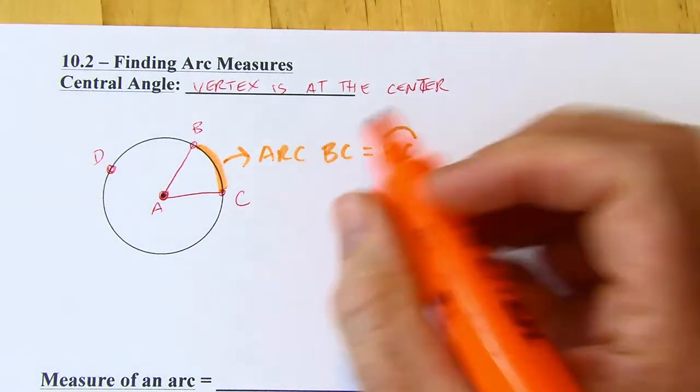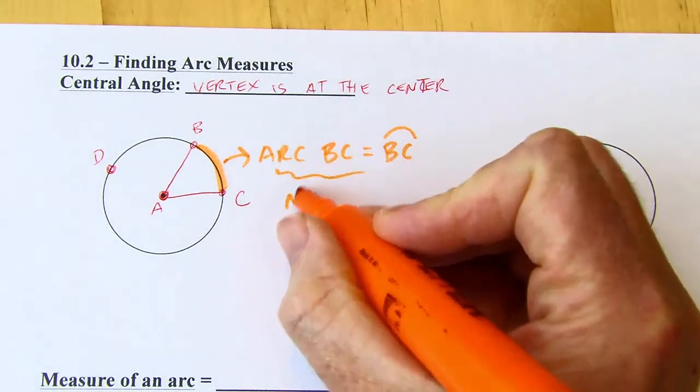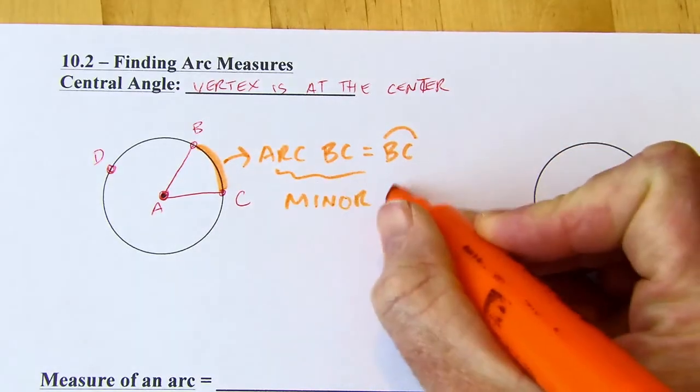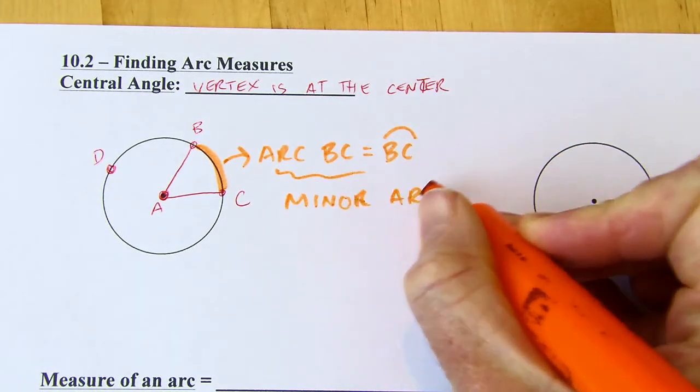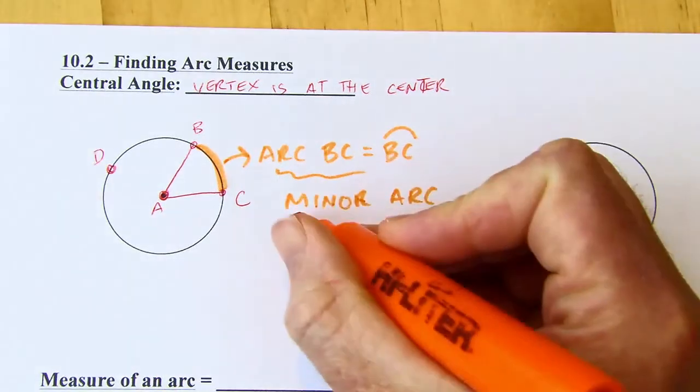So this particular arc would be a minor arc. And that just means it's less than half of the circle.